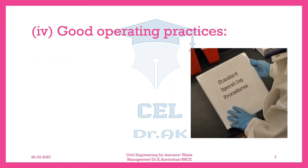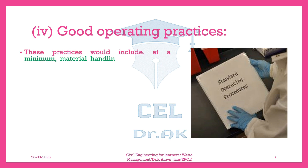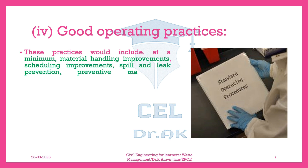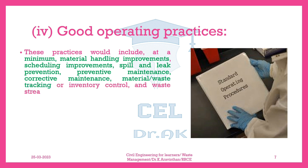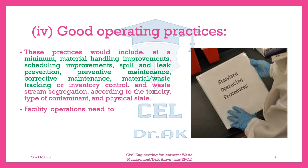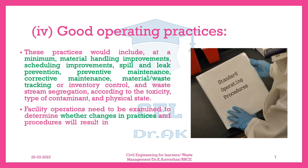Fourth, good operating practices. These practices would include, at a minimum, material handling improvements, scheduling improvements, spill and leak prevention, preventive maintenance, corrective maintenance, material/waste tracking or inventory control, and waste stream segregation according to the toxicity, type of contaminant, and physical state. Facility operations need to be examined to determine whether changes in practices and procedures will result in the generation of non-hazardous or less hazardous waste, or waste reduced in toxicity or volume.